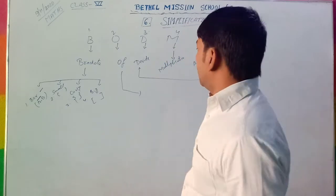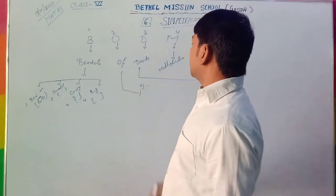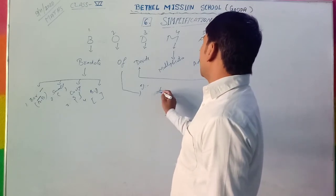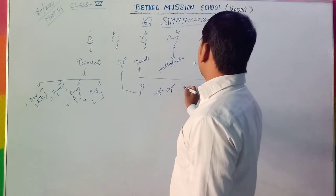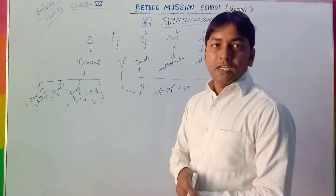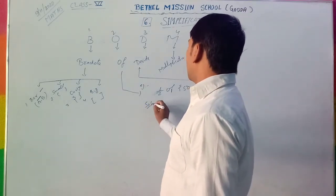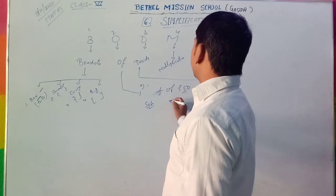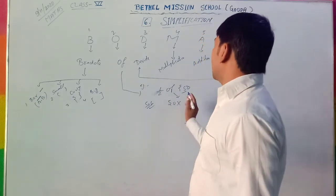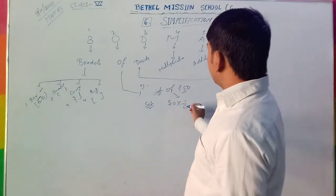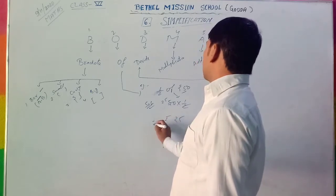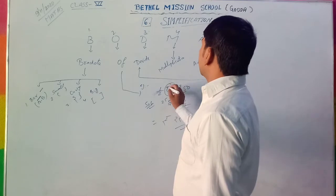Now, what is off? I take an example to understand this. Suppose that written 1 by 2 of 50 rupees. So how will you solve this? Off stands for multiplication — you write 50 multiplied by one half. You can cancel, that gives 25. So 25 rupees. It means off means multiplication.